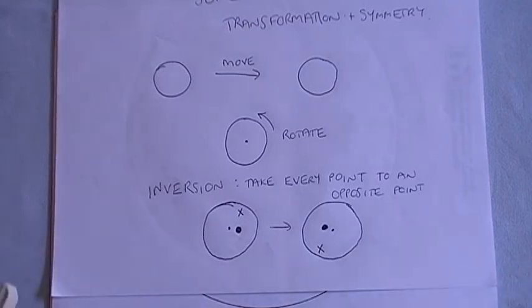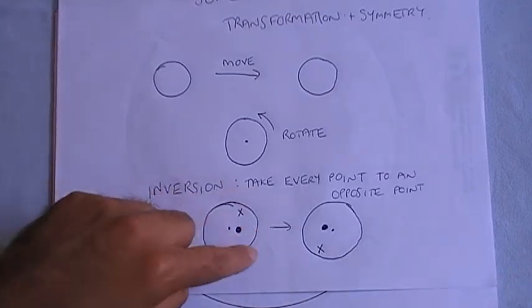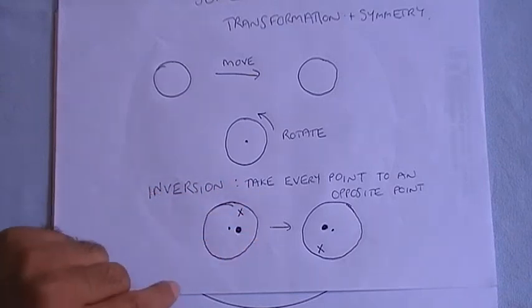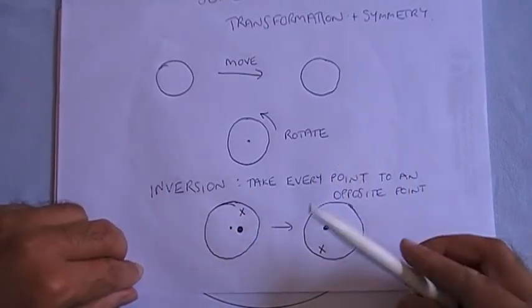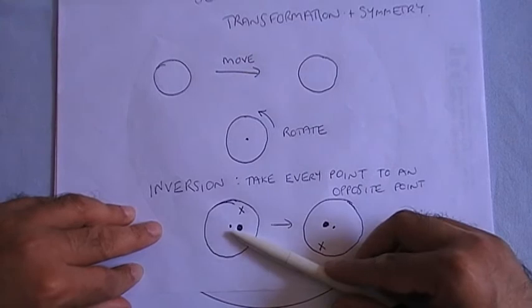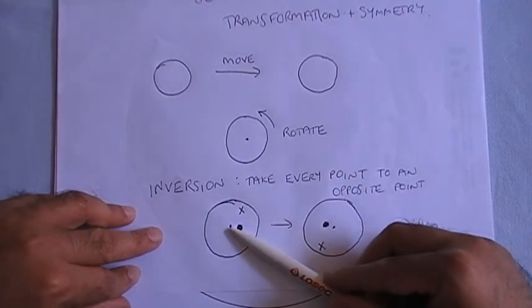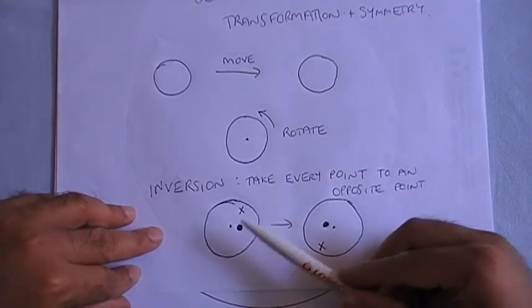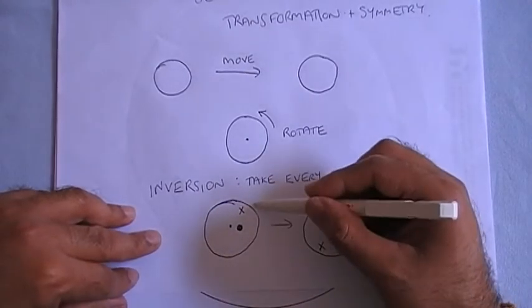And then another form of transformation that people often talk about is inversion. And so the idea here is that you have a shape which is laid down on a surface and you pick a central point.